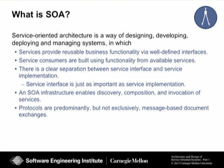The third component is the SOA infrastructure. What the SOA infrastructure does is enable discovery, composition, and eventually invocation of these services. When we talk about architecture, we have to talk about components and connectors. In service-oriented systems, connectors refer to the protocols that are predominantly — but not exclusively — message-based document exchanges, typically based on XML.